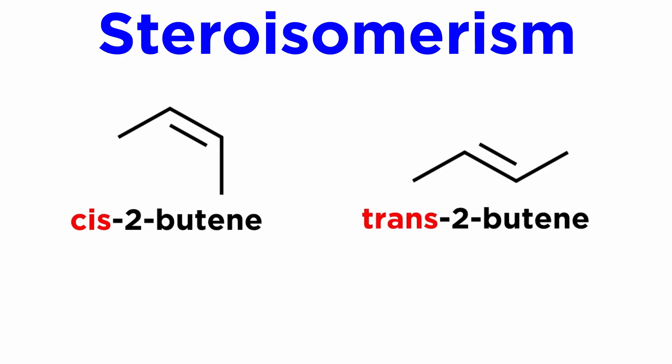As we have seen previously, when we have a disubstituted alkene like 2-butene, we can have a cis isomer where the methyls are on the same side of the double bond, and we can have a trans isomer where the methyls are on opposite sides of the double bond.